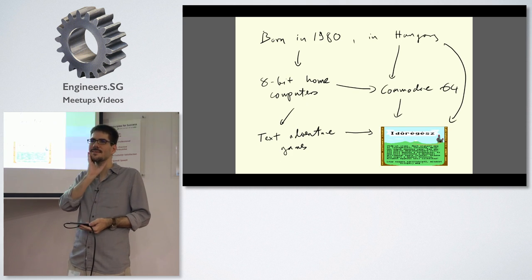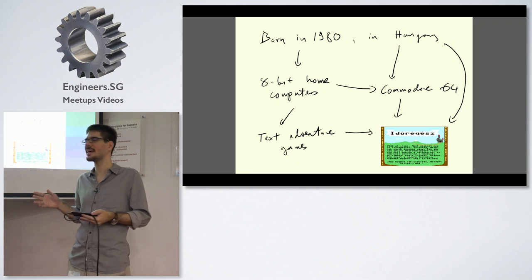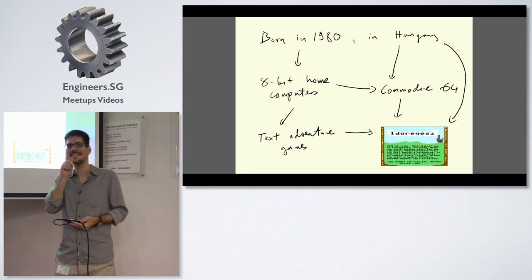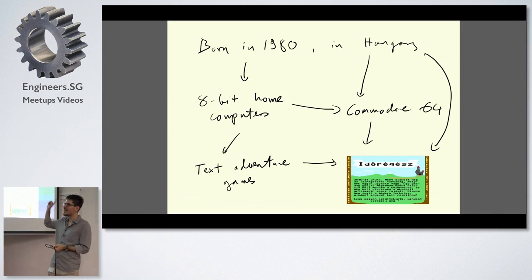The first slide is the one everyone hates, which is all about the speaker, but in this case it's actually important because I was born in 1980, which meant I grew up with 8-bit home computers. I was born in Hungary and if you used 8-bit home computers there, that meant the Commodore 64 or the ZX Spectrum. In my case it meant the Commodore 64.